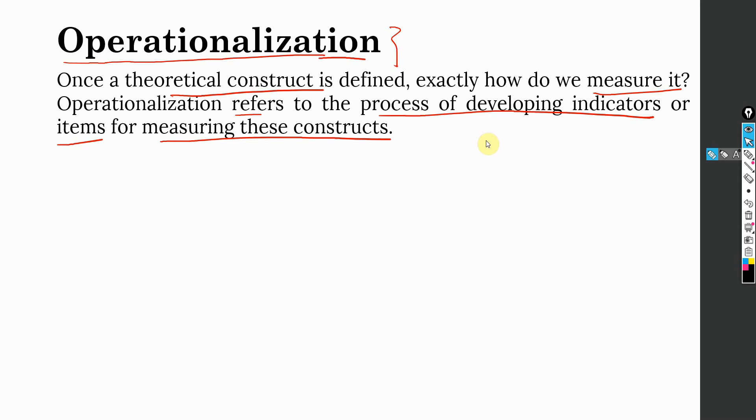How do you get these indicators? You get it from existing research most of the times. But what if they are not available in existing research, then you might have to develop your own. There are videos on the channel on how to search existing literature for questionnaires. This will come later in the sessions as well.